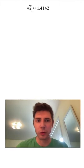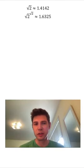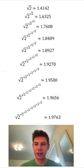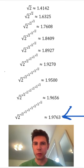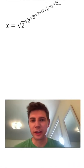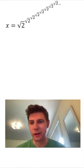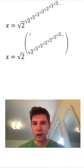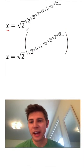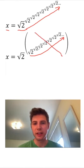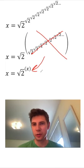Root 2 is approximately 1.4142. Root 2 to the root 2 is 1.6325. Root 2 to the root 2 to the root 2 is 1.7608. They start to slow down as they approach 2 — the next one is approximately 1.9763. We can see that as we continue adding more, it's approaching 2. But there is a way to calculate it exactly. Let's assign the whole thing x. I'll rewrite it as x equals root 2 to the power of (all of this stuff). Since x is a root 2 going on forever, I can replace the inside with x, giving us x equals root 2 to the x.